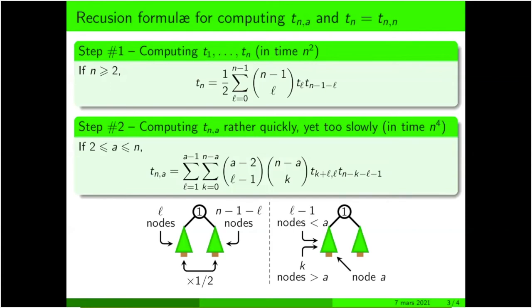Then, saying that we have l minus one nodes that are smaller than a in that left subtree, and k nodes that are larger than a in that left subtree, we will have to choose l minus one among a minus two possibilities for those l minus one nodes, and k among n minus one minus a possibilities for the k nodes larger than a.